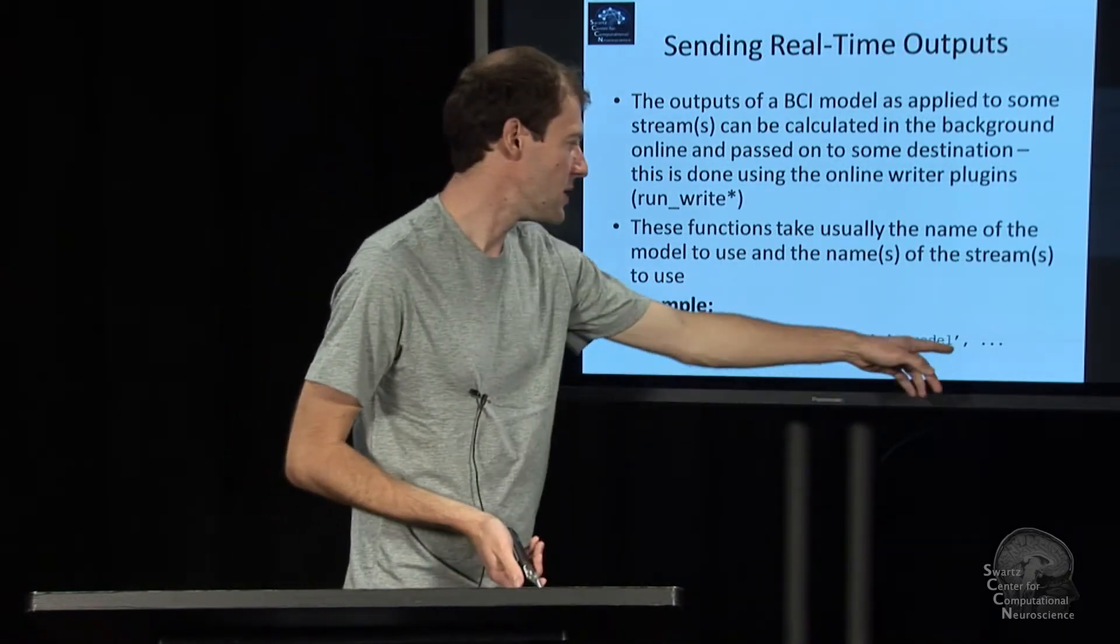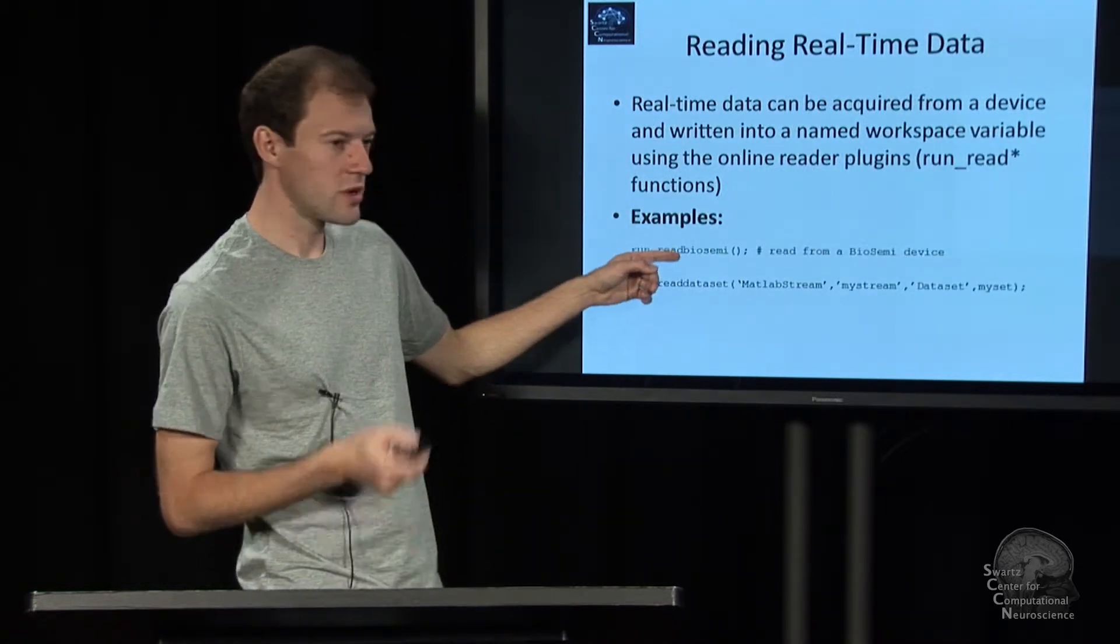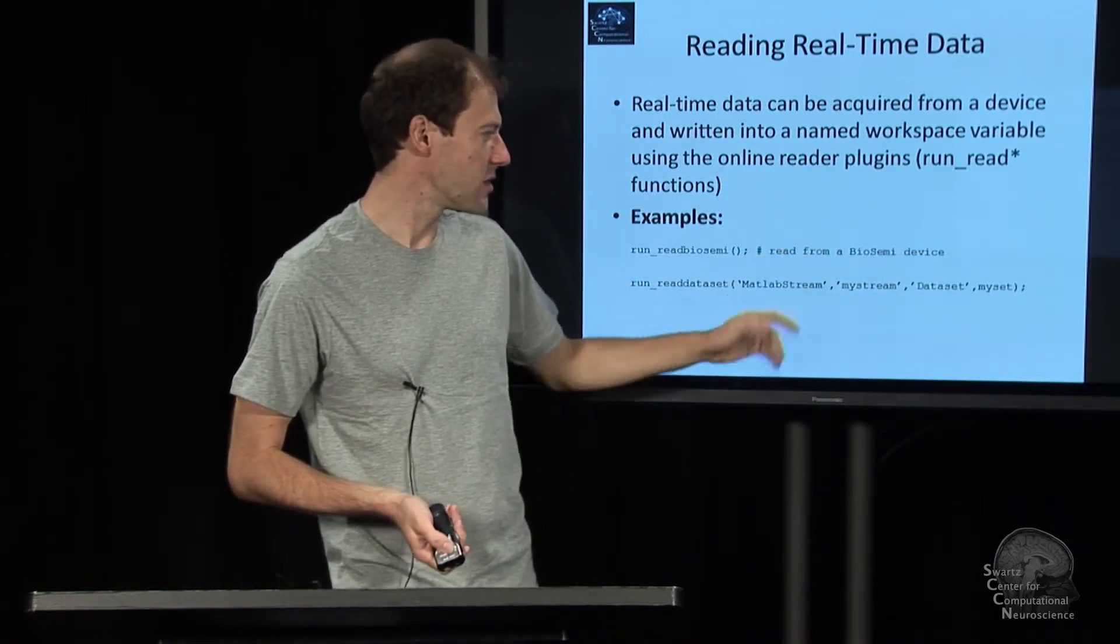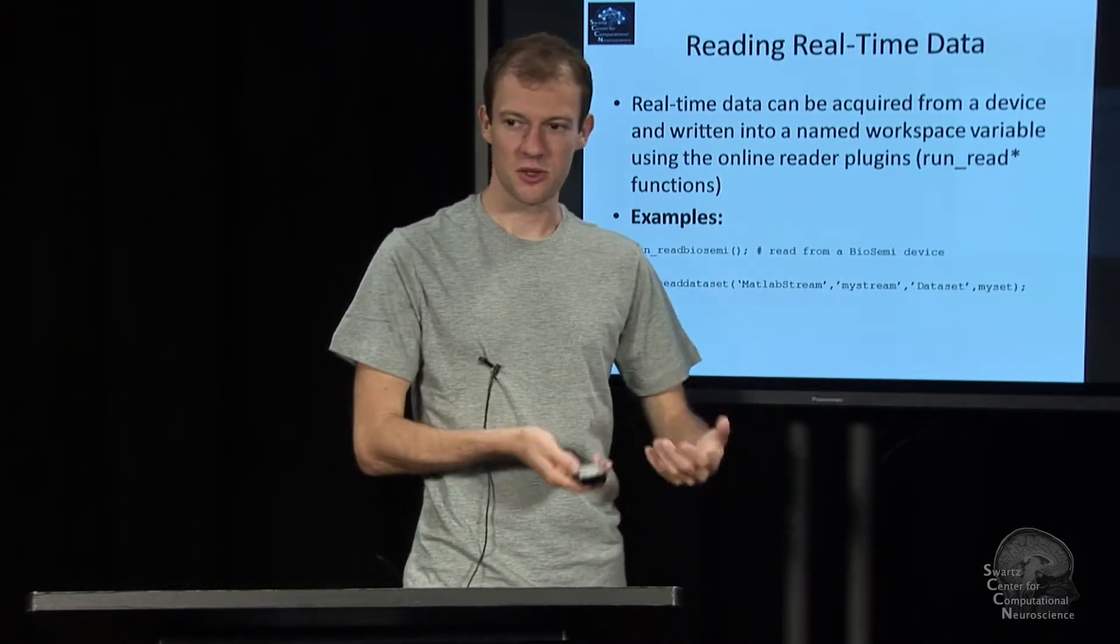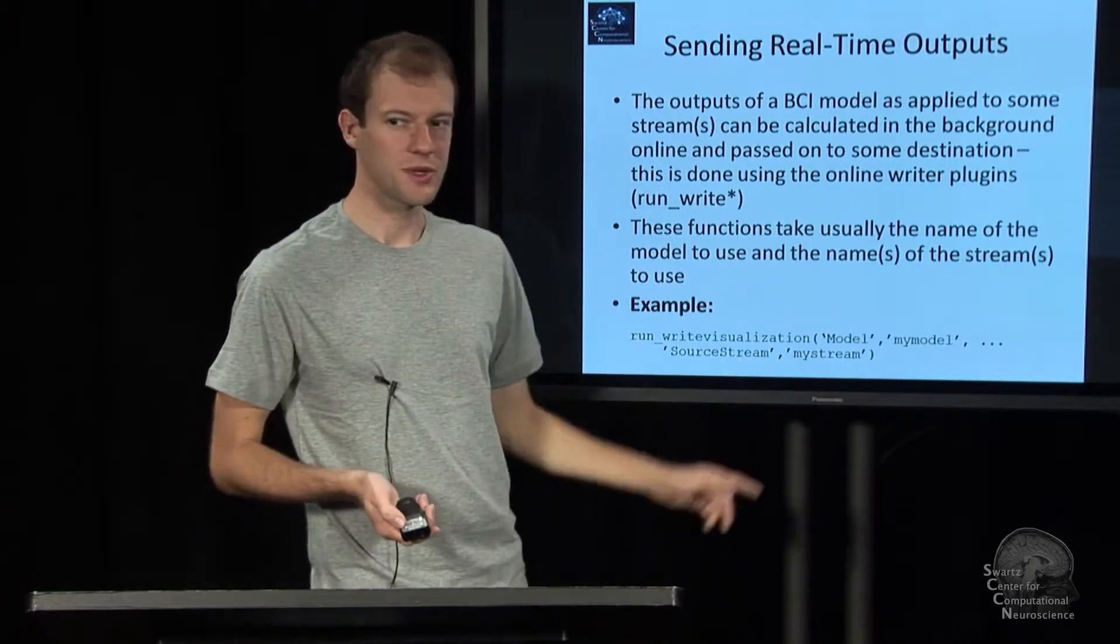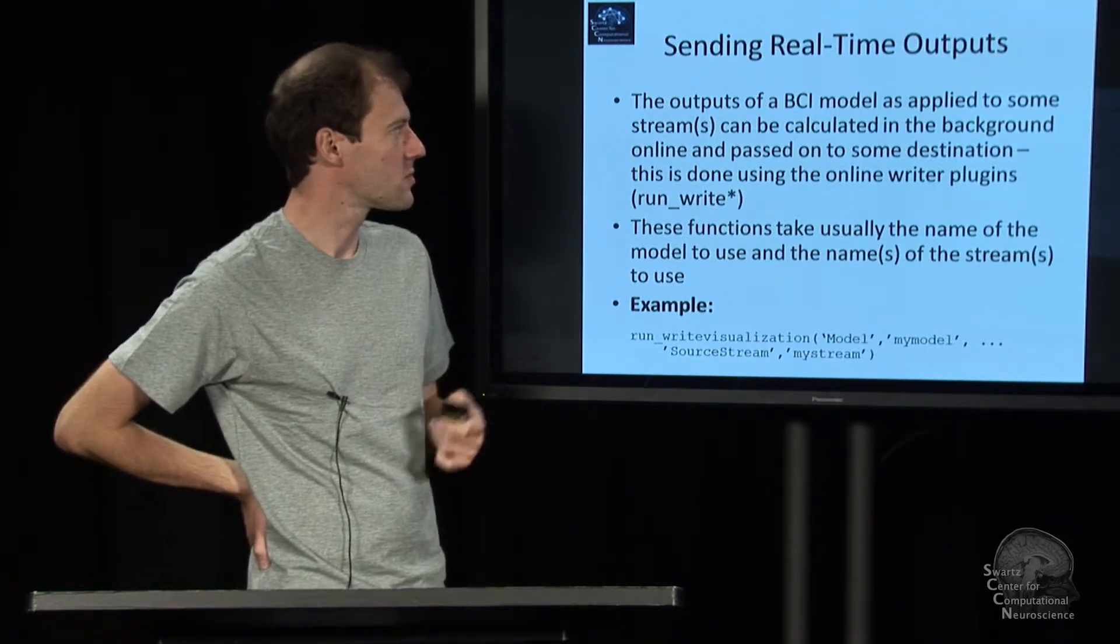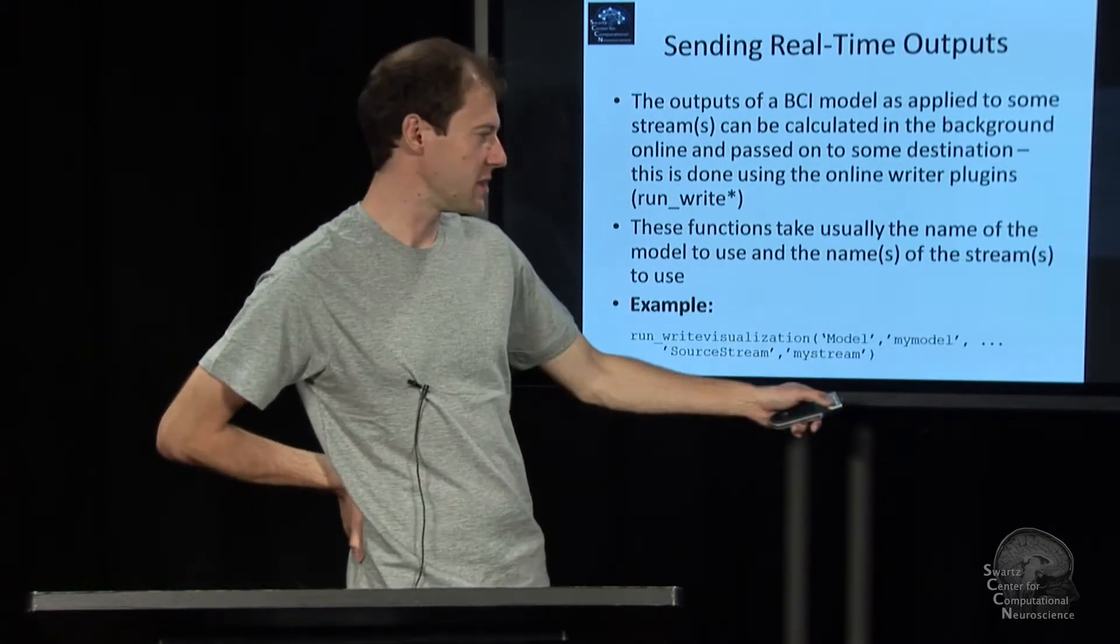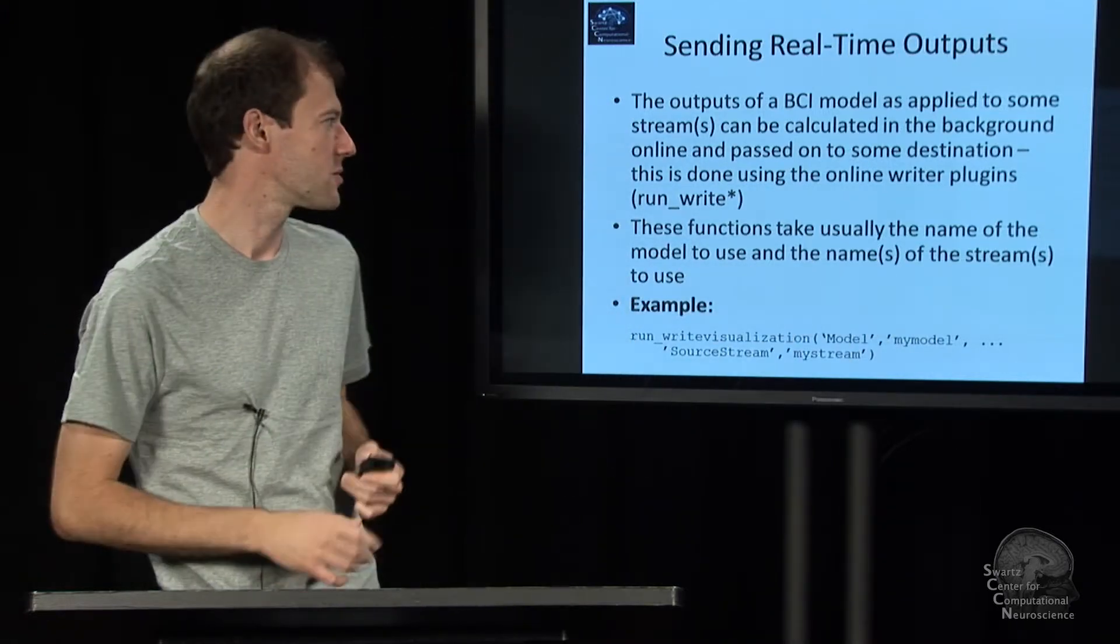And it wants the name of the stream variable in the workspace that it should read from. And then you can go on and pass in other arguments. So basically, here with the previous slide, you say, I want to call my biosemi stream something or my dataset stream. And you got your model from bci_train as a variable. So you have two variables there. And here you just say which these variables are. And then it'll just run stuff online and send it somewhere. There's usable defaults, by the way. So I think that by default it assumes last stream and last model, and the other functions happen to also call their outputs last stream and last model.